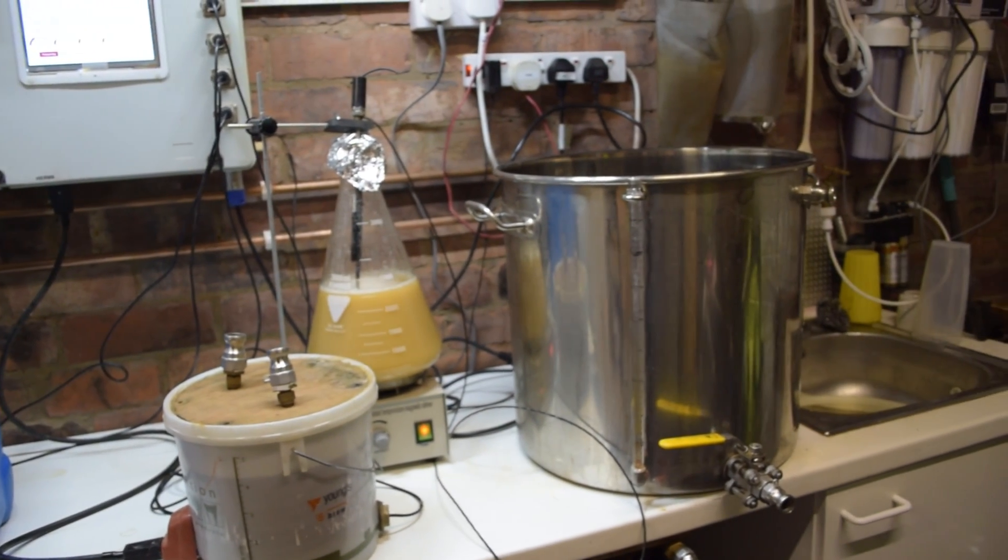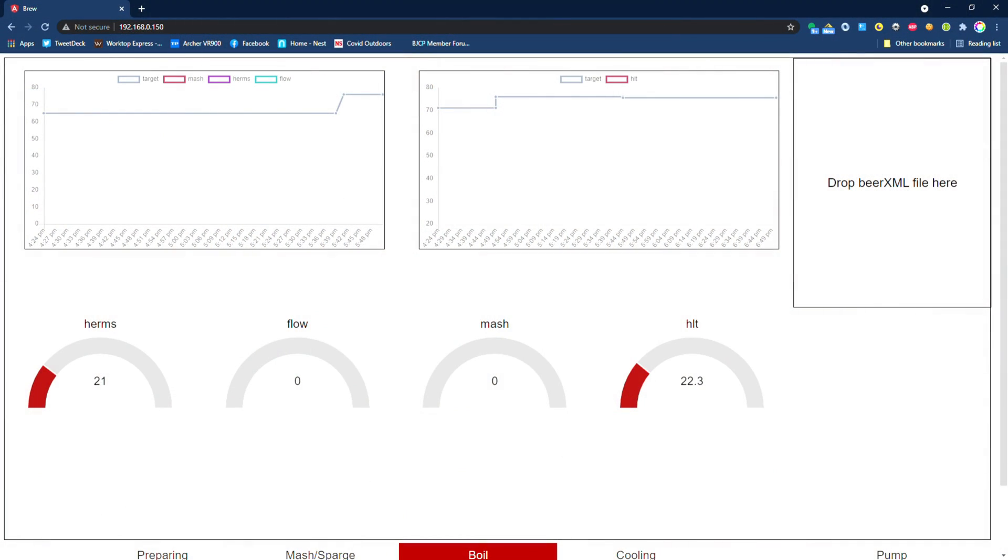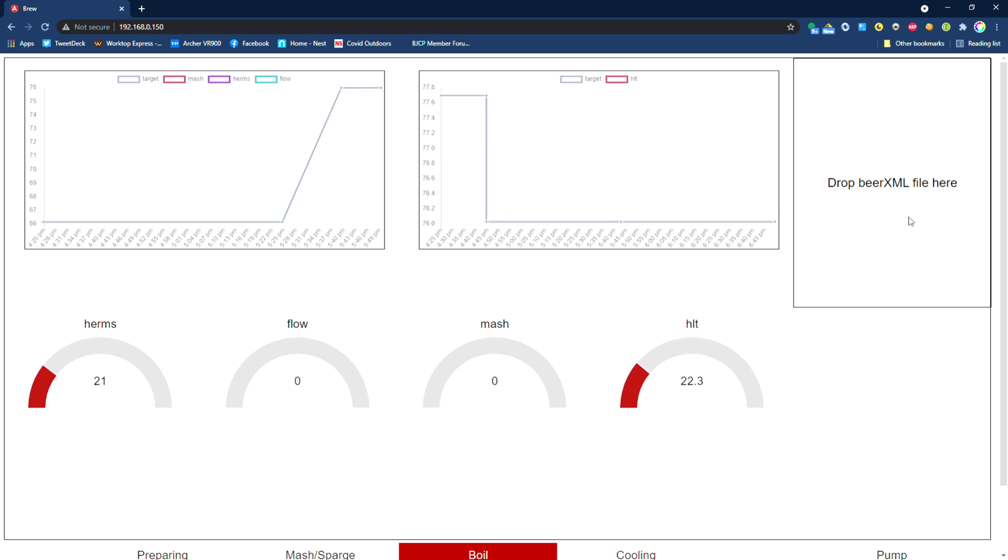And the HLT is coming up to temperature. Now when I said loaded the settings earlier, you may be wondering what I meant. Well, if you view the controller web page interface on a PC, you get an extra box showing an area to drop a beer XML file into. So if you export a file from something like BeerSmith and drag and drop it into that area, it will load the file and parse it and use that to update the settings for the mash temperatures and the HLT temps.